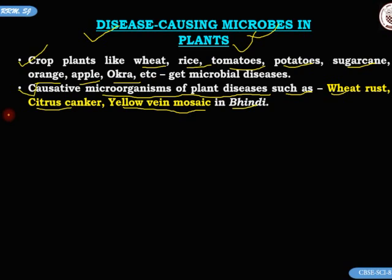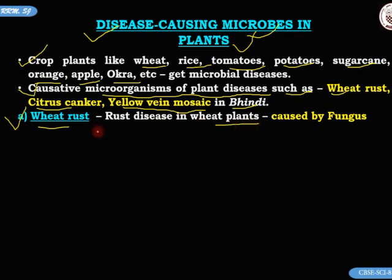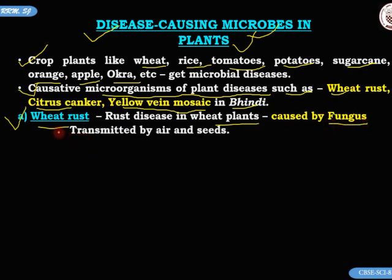Let us look at them one by one. The first is wheat rust. Wheat rust disease is caused in wheat plants, as the name suggests, and it is caused by a fungus. This disease is transmitted by air and also by seeds.